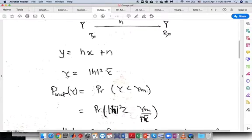Instantaneous SNR is represented as gamma equals mod of h square times gamma bar, where gamma bar is the average SNR. We have seen these two equations in our previous experiments as well.